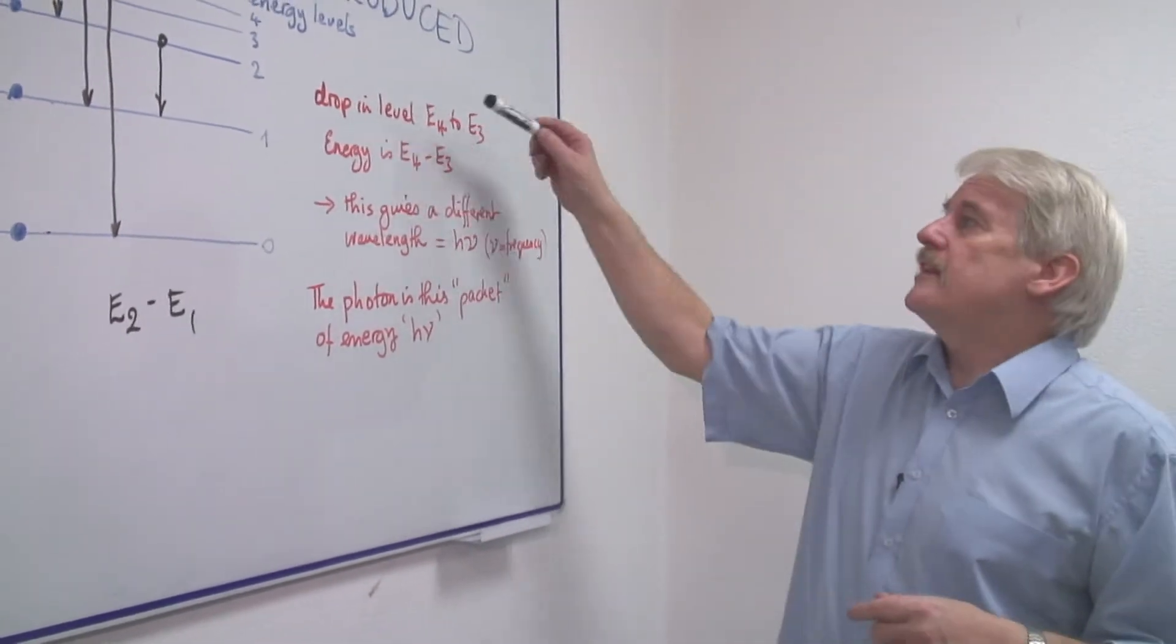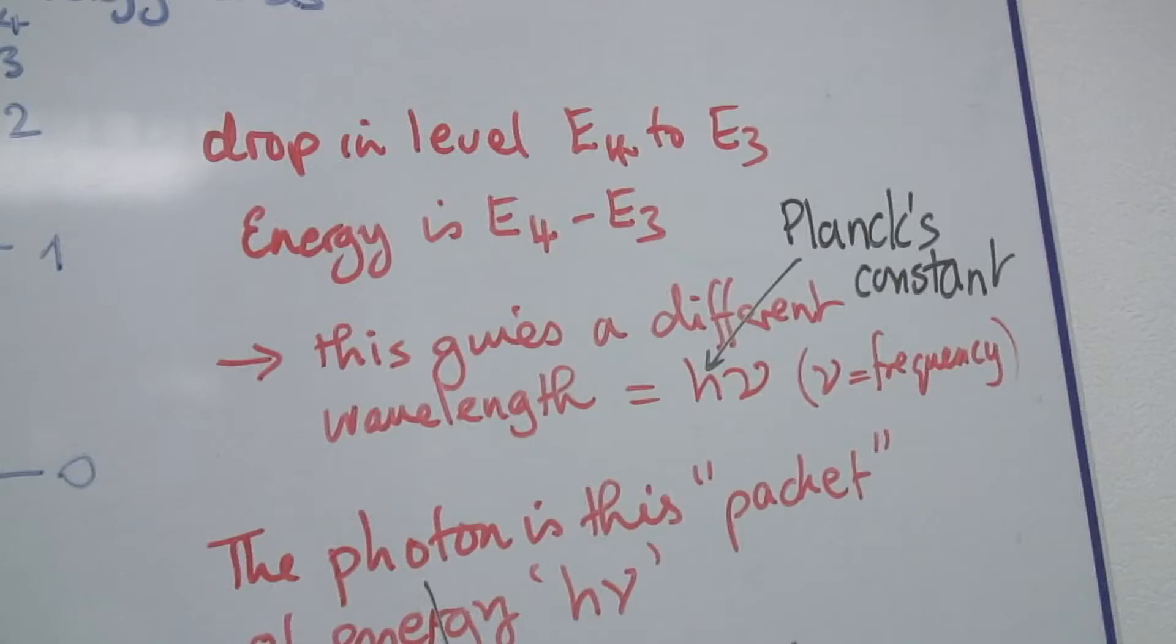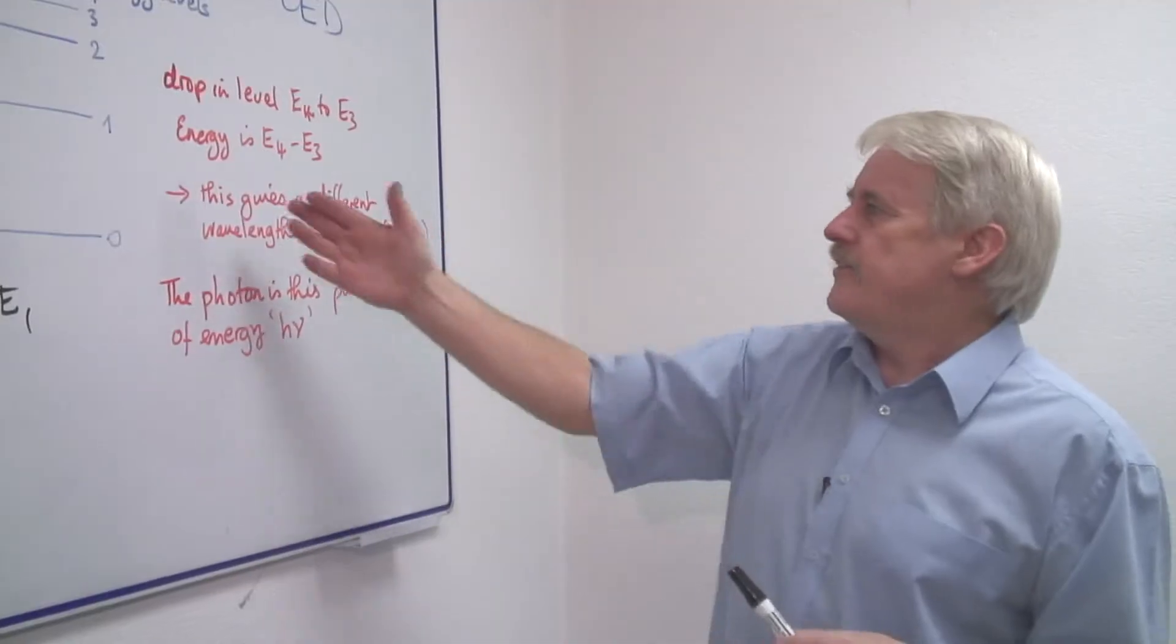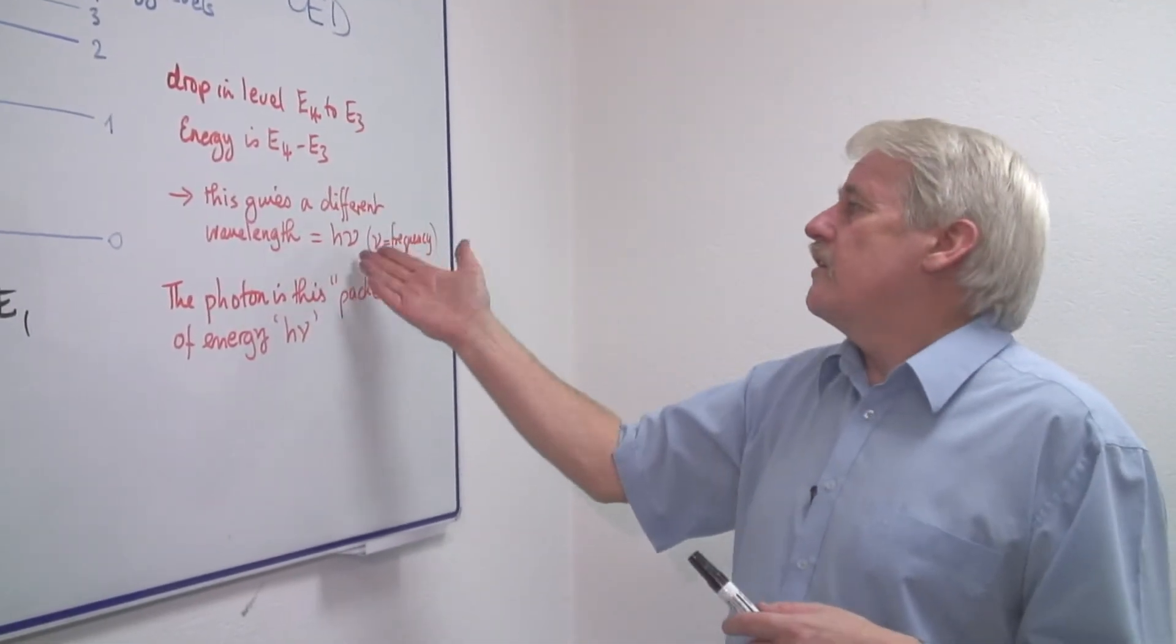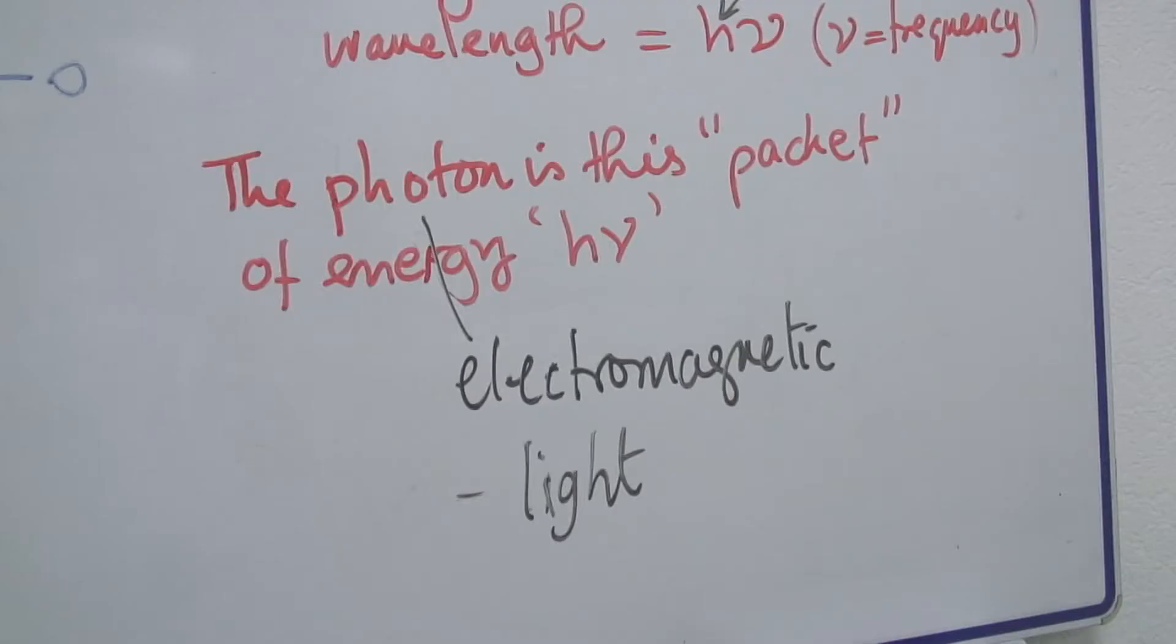So a drop in level, say from E4 to E3, the energy associated with that is E4 minus E3. And this gives a packet of energy, which we call a photon, which is described as H nu.